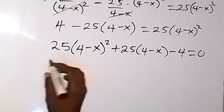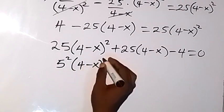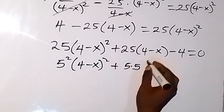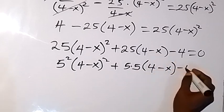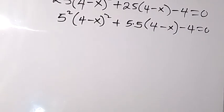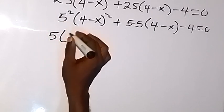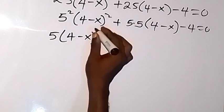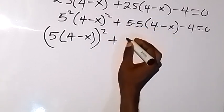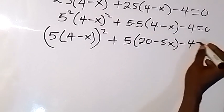Let's express 25 as 5 squared, so that we have 5 squared into bracket 4 minus x, then minus 4, then minus 4 equals to 0. From the law of indices we can write it as 5 multiplied by 4 minus x, all raised to power 2, and we can break the power out. Then using 5 to open the bracket we have 5 into bracket 20 minus 5x, then minus 4 equals to 0.